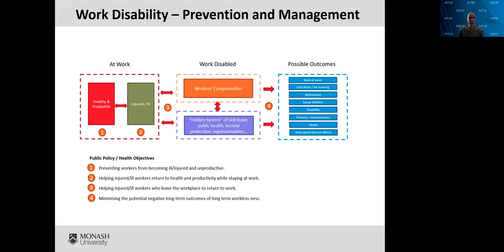On the left, we've got when people are at work — they may be healthy and productive, and hopefully that's the state that most of us are in most of the time. There we have an opportunity for primary prevention: helping people remain healthy and productive and preventing workers from becoming ill or injured. We also have an opportunity to help workers who are ill or injured return to health while retaining their employment — these are often called stay-at-work opportunities. If people become ill or injured and leave the workplace and are work disabled for a period of time, that's when we start talking about return to work interventions: helping those workers to return back to the workplace.